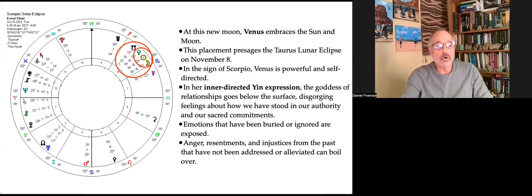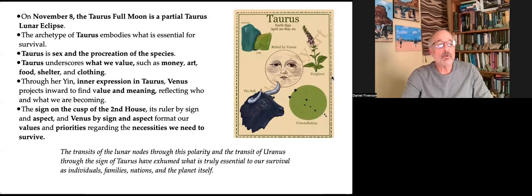Emotions that have been buried or ignored are exposed. Anger, resentments, and injustice from the past that have not been addressed or alleviated can boil over. On November 8th, the Taurus full moon is a partial Taurus lunar eclipse. The archetype of Taurus embodies what is essential for survival. Taurus is sex and the procreation of the species. Taurus underscores what we value, such as money, art, food, shelter, and clothing.